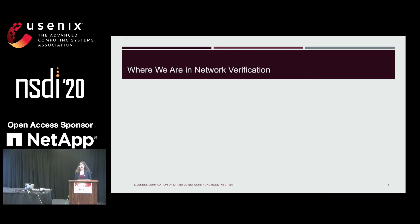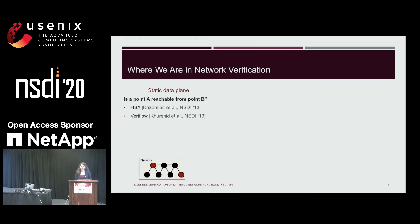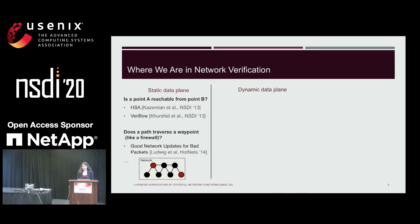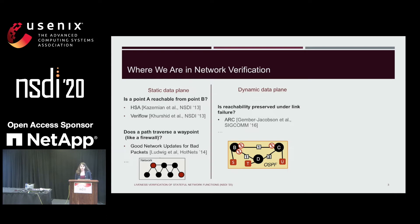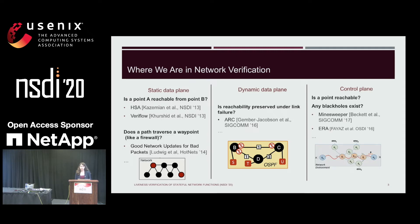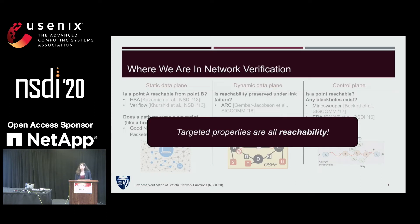In recent years, there have been lots of exciting work in network verification, and they mainly fall in three categories. The first group enables verification on a single static snapshot of the data plane — properties such as whether a point is reachable from another. HSA and Veriflow are among the famous works here. Another property is whether a path traverses a waypoint such as a firewall. The second group targets dynamic verification of the data plane, considering changes through time. The third group, tools like Minesweeper, verifies reachability on the control plane. Unfortunately, all these approaches target different flavors of only one specific type of property: reachability.